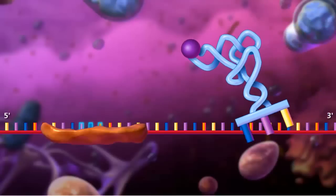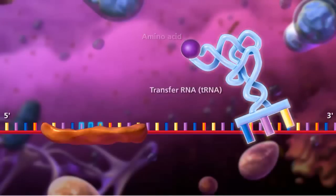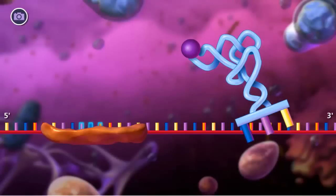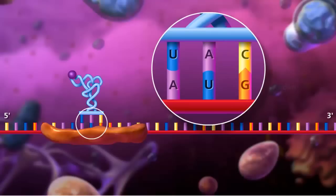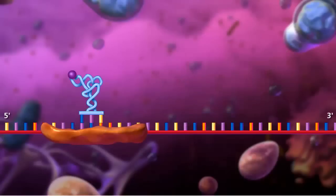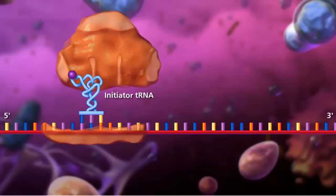Each amino acid is brought to the ribosome by a specific transfer RNA molecule. The type of amino acid is determined by the anticodon sequence of the transfer RNA. Complementary base pairing occurs between the codon of the messenger RNA and the anticodon of the transfer RNA.